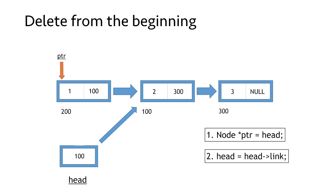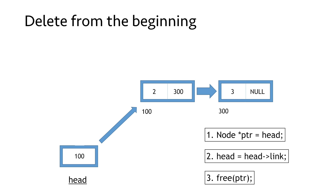We will delete this node by simply writing free(ptr), which will delete this node from the memory, and we have successfully deleted a node from the beginning of our linked list.